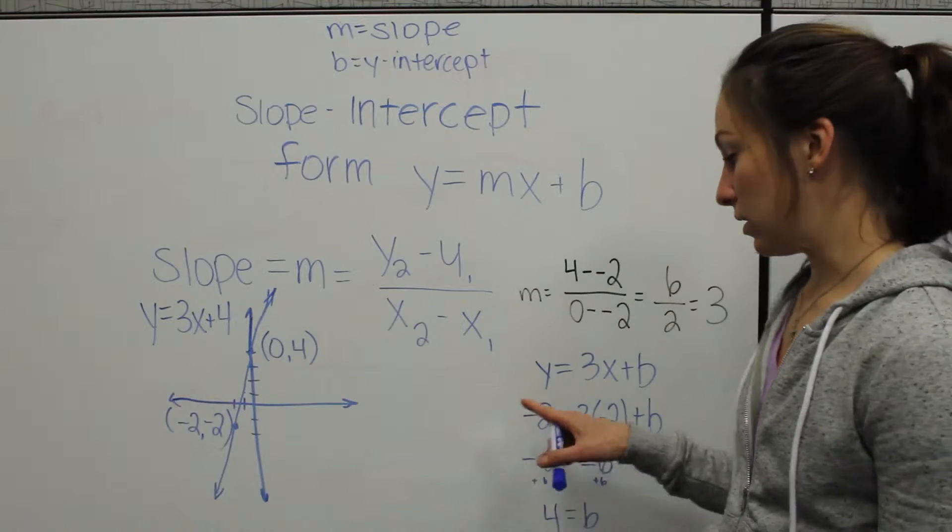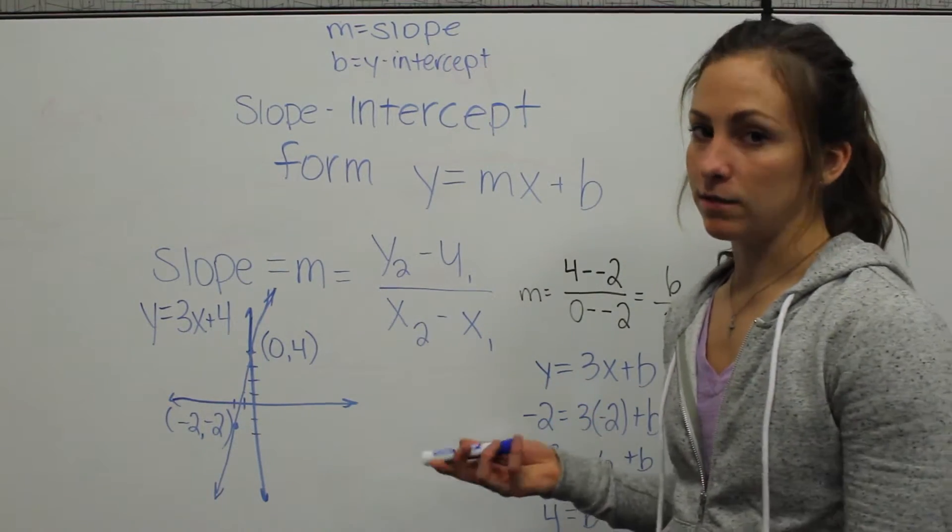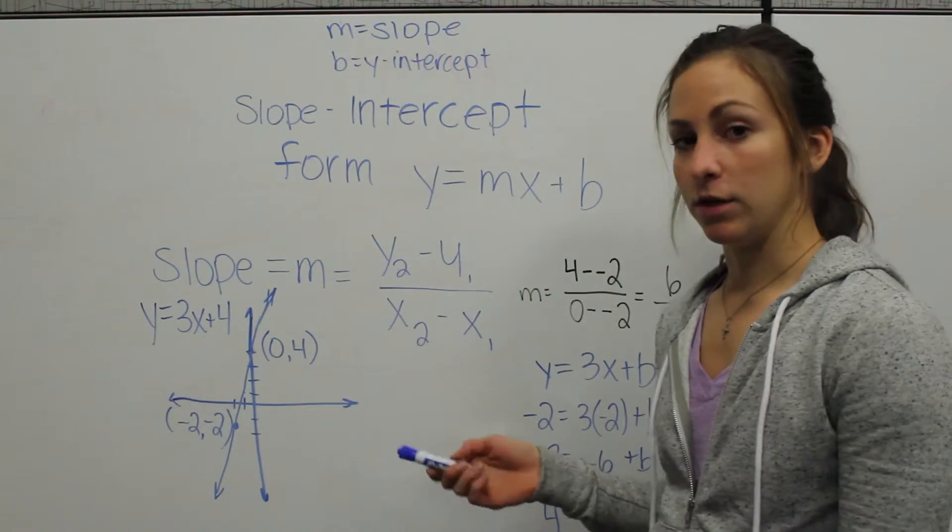So now we have the equation y equals 3x plus b, because we calculated our slope. We still need to find our y-intercept. How can we do that?